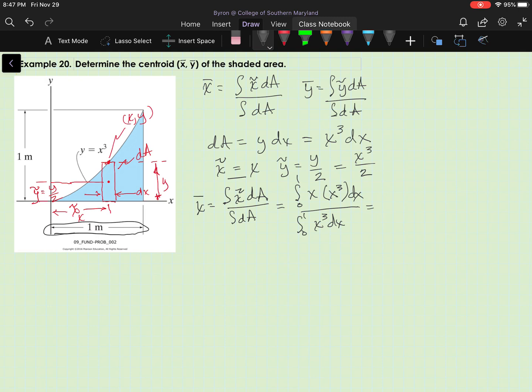I do that integration, and I get x to the 5th over 5, from 0 to 1, over x to the 4th over 4, from 0 to 1, which equals 1 5th over 1 4th, which equals 4 5ths, or 0.8 meters.